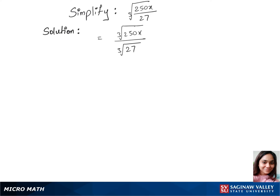Now let's split up 250x under the cubic root to cubic root of 125 times 2 times x over cubic root of 27. 27 is 3 cubed, so cubic root of 27 is 3.